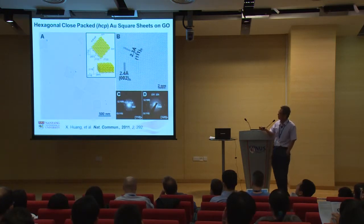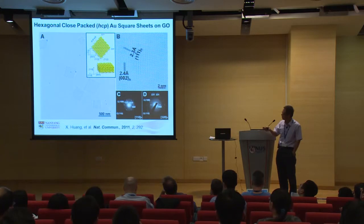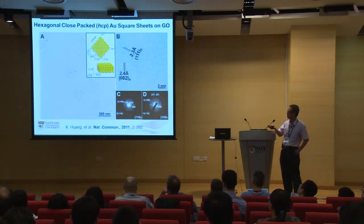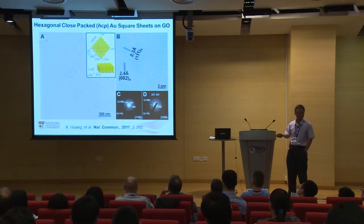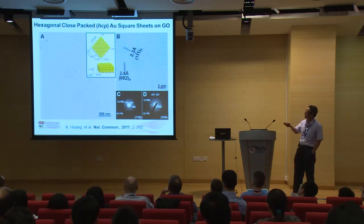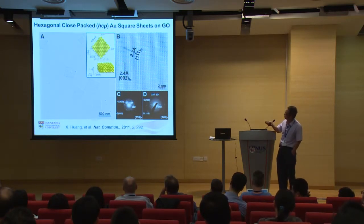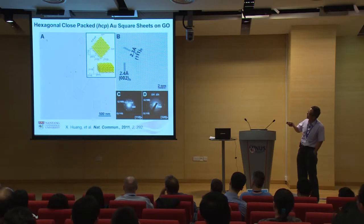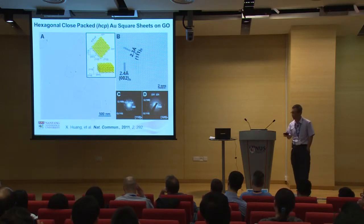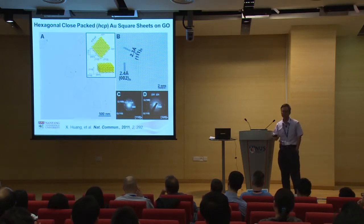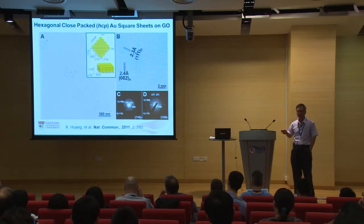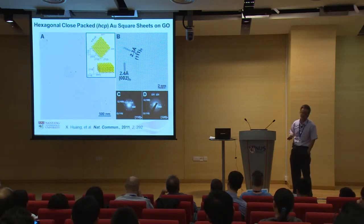From TEM images, you can see this gold sheet. Compared to by-products like gold nanoparticles, the contrast is very weak, meaning the gold sheet is very thin. Using high-resolution TEM, you can clearly see the gold atoms follow ABAB stacking — this is the HCP, hexagonal close-packed gold structure. All 50,000 previously published papers on gold nanoparticles claimed the FCC structure; this is the first time we synthesized pure HCP gold.